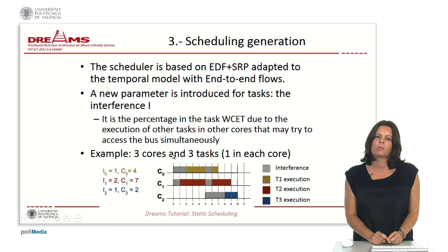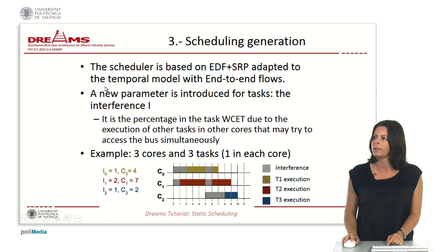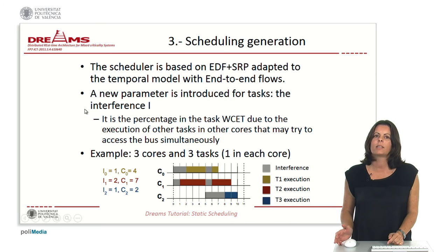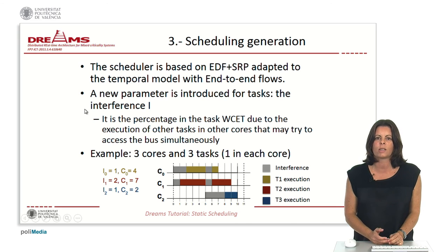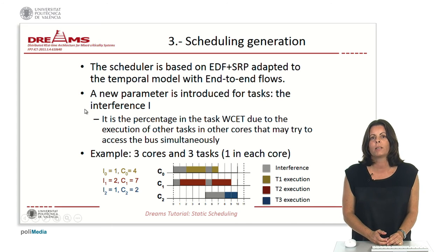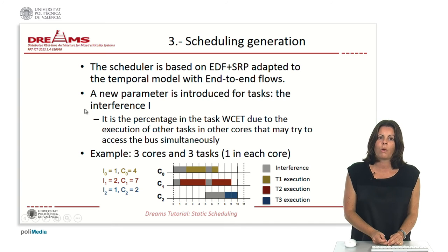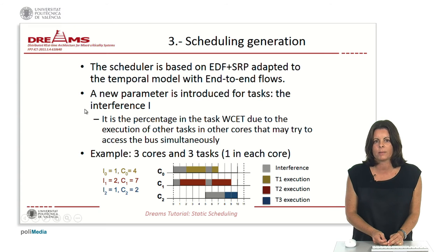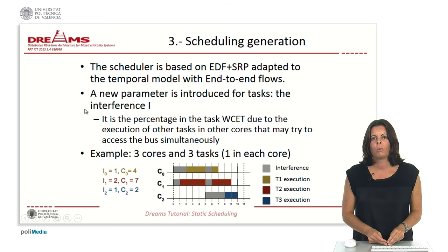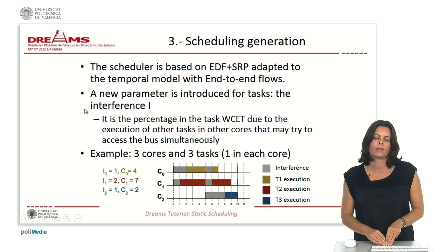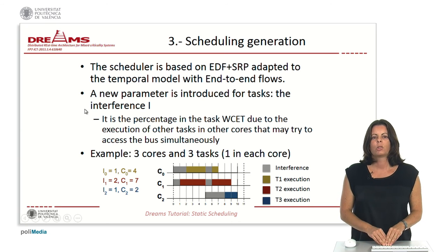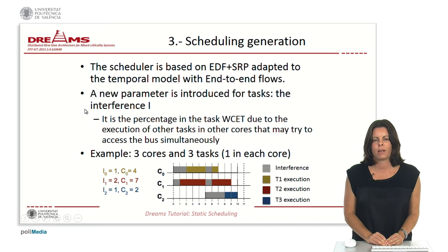To model the interference between tasks in different cores, we have introduced a new parameter called interference. This interference is the percentage of the worst-case execution time of tasks belonging to partitions, due to the execution of other tasks in other cores that may try to access the bus simultaneously. So, even if tasks execute in parallel in different cores, when they have to access the bus this will cause some delay to the task that cannot access the bus immediately. This is modeled by the interference parameter.